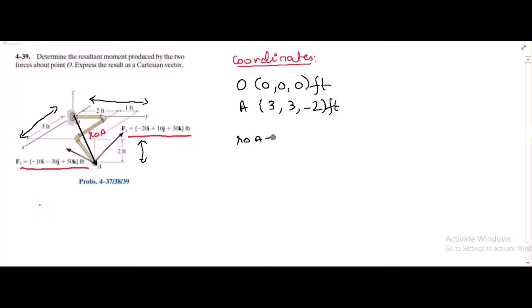ROA is equal to coordinates of point A minus coordinates of point O, so it is 3i plus 3j minus 2k.